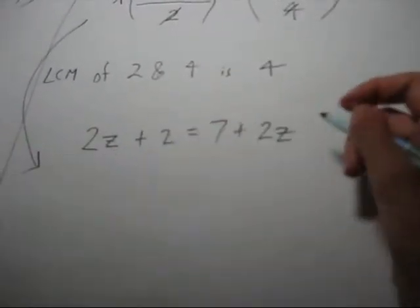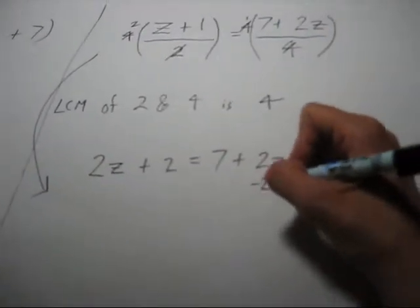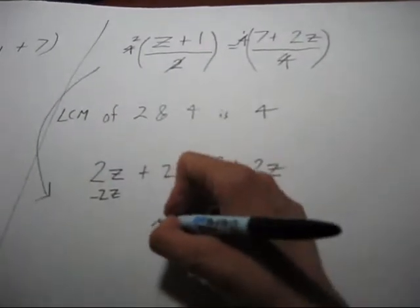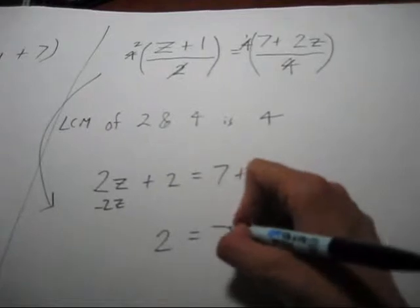Well, let's get the z's on the same side. Subtract 2z both sides. And they disappear. We get 2 equals 7.